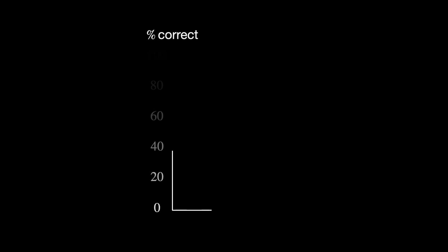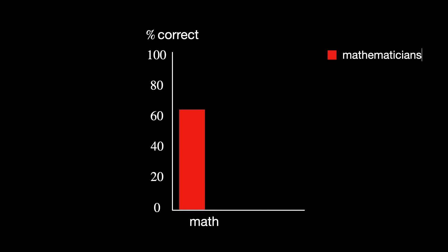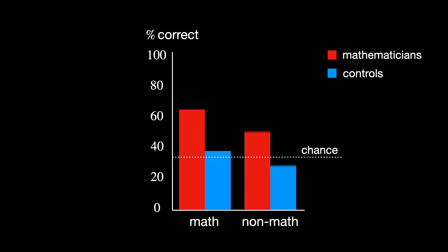As might be expected, mathematicians scored high on the correctness of mathematical statements, while the controls, in other words the non-mathematicians, were close to chance in guessing whether a mathematical statement was correct or not. In non-math questions, the two groups scored pretty much the same.